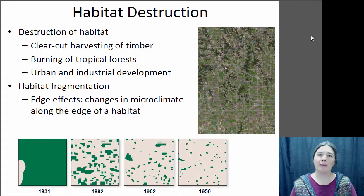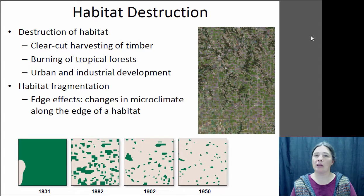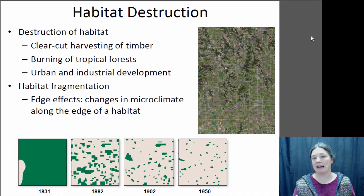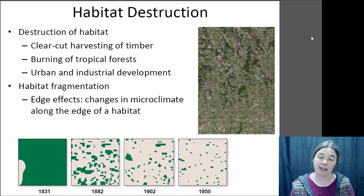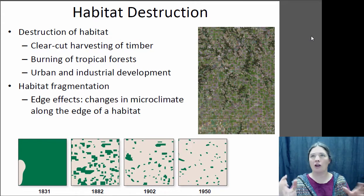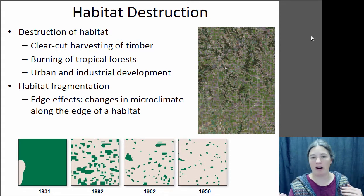Habitat destruction is the largest cause of species declines. Humans come in and want to use the land, so we destroy or disrupt natural habitats — clear-cutting timber, burning tropical forests, urban and industrial developments, agriculture. All of these take land out of natural habitats. That reduces the total amount of habitat available, but it also fragments the habitat. Habitat fragmentation is really important because some species need a large contiguous stretch of habitat in order to survive, and if you chop up the habitat into little bits they won't actually be able to survive. You have what you call edge effects, where the humidity and light is different near the edge of a fragment than in the middle.